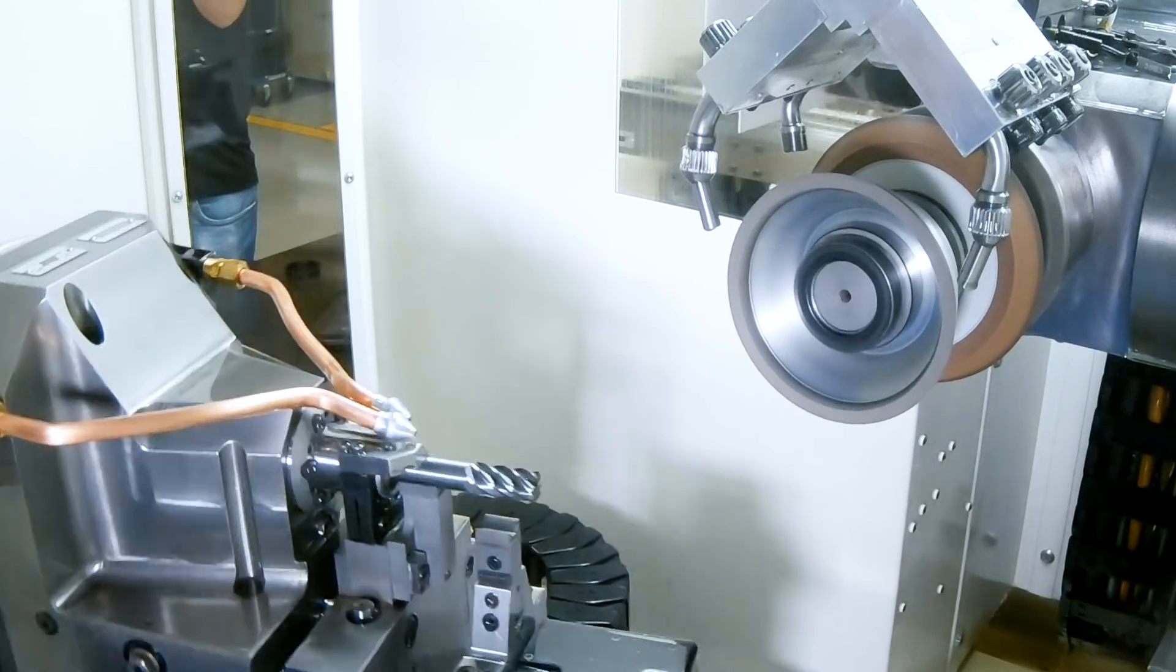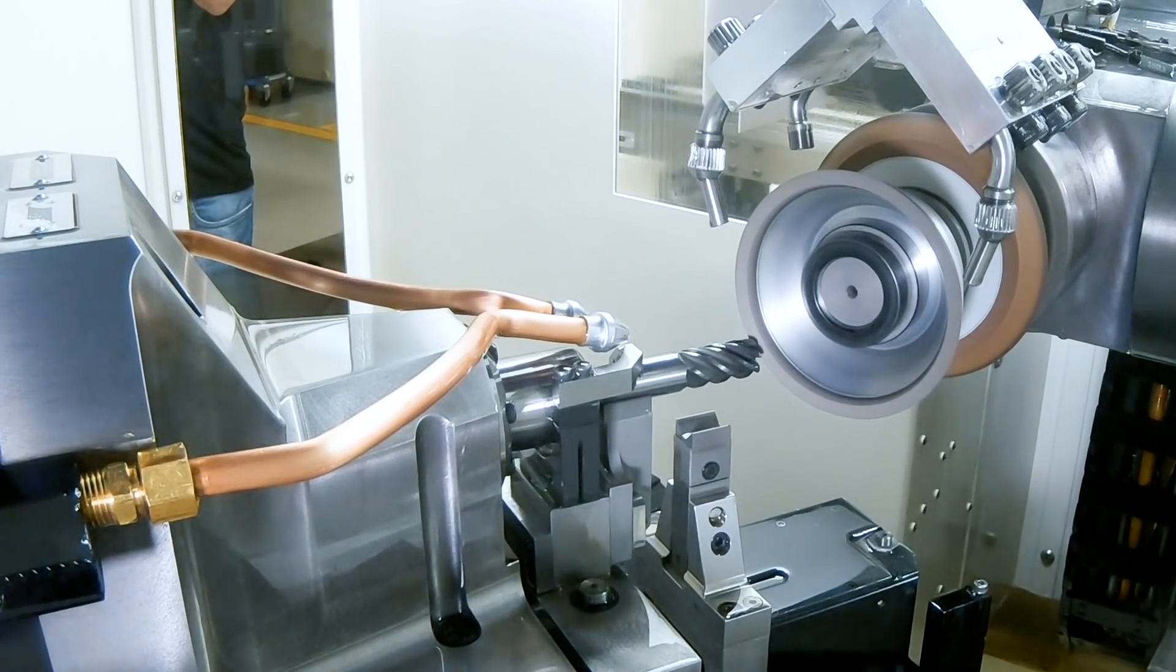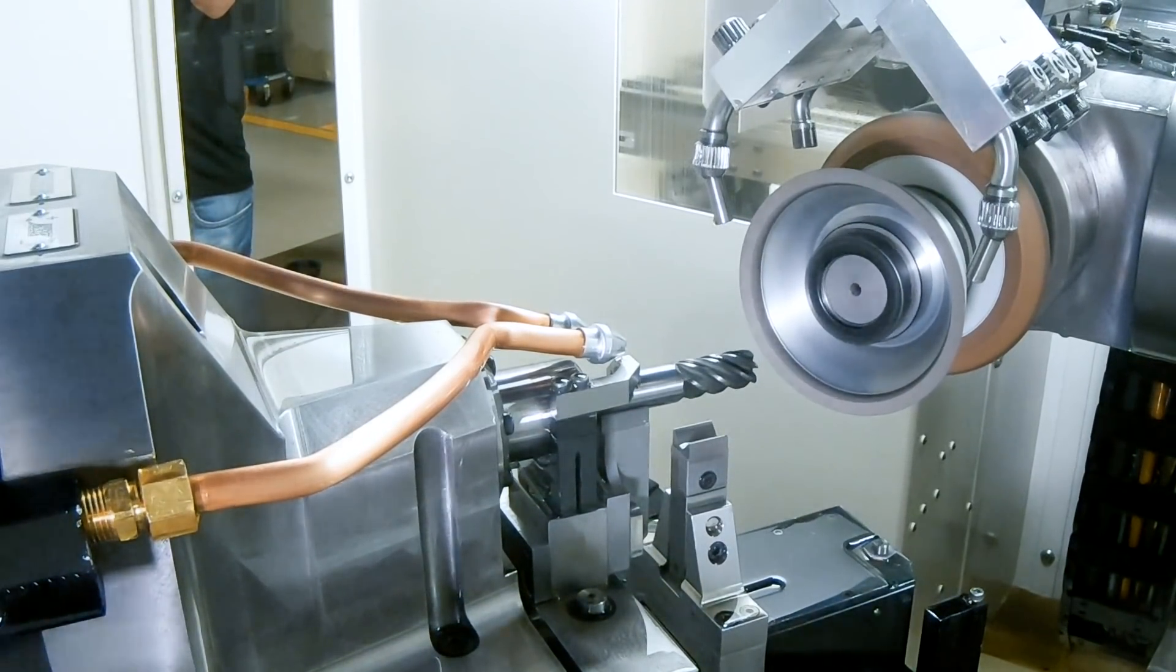Now we're doing the notching operations. Harvey III six flutes. So along those two center cutting flutes on the end, we're going to put a little notch in the end. That's that extra grind you see on the face of it.